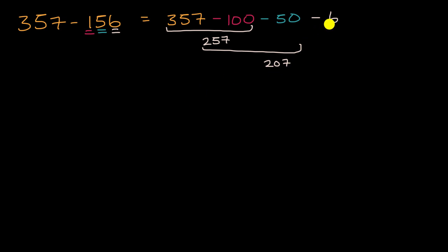And then if I took 207 and I subtracted six from that, so 207 minus six, that is going to be equal to 201. I just took away those six ones, and I had seven ones on top of the 200s before to get us to 201.